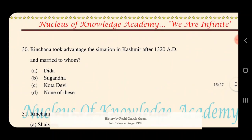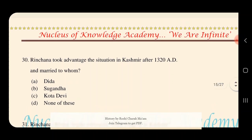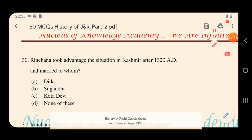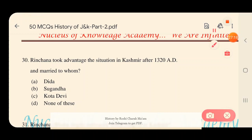Question 30: Rinchan took advantage of the situation in Kashmir after 1320 AD and married whom? Options: A) Dida, B) Suganda, C) Kota Devi, D) None of these. The answer is C — Kota Devi. Rinchan married Kota Devi.